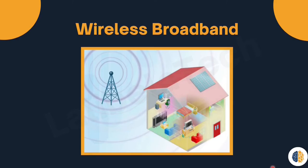For this service we need a wireless internet service provider (WISP). A WISP is a service provider that connects subscribers to a designated access point or hotspot using similar wireless technologies found in home wireless local area networks. WISPs are more commonly found in rural environments where digital subscriber lines or cable services are not available. Although a separate transmission tower may be installed for the antenna, typically the antenna is attached to an existing elevated structure such as a water tower or radio tower. A small dish or antenna is installed on the subscriber's roof within range of the WISP's transmitter.